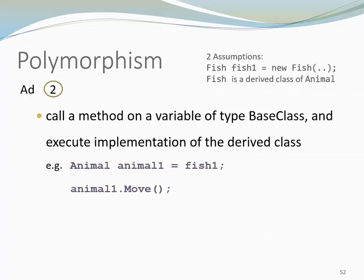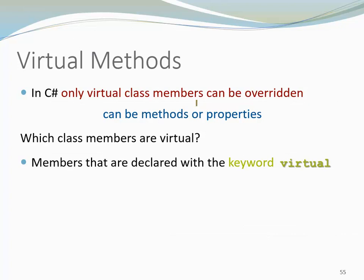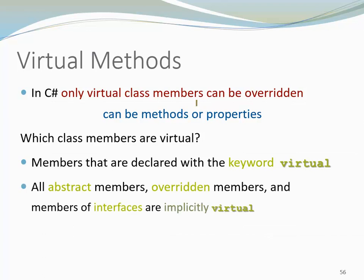I won't elaborate on this polymorphic behavior since it is already known from Java. However, I do want to use this example to talk about the keyword virtual. In Java, every method can be overridden unless declared final. C-sharp chose another route — in C-sharp, only virtual class members can be overridden. The overridable class members are methods and properties. Typically we mark them with the keyword virtual. However, all members marked with abstract or override are implicitly virtual, as are members of interfaces.